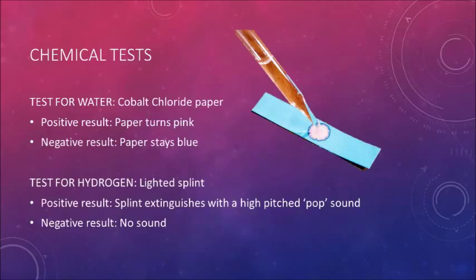The test for hydrogen that we used was to insert a lighted splint into the mouth of the test tube. It showed a positive result - the splint extinguishes with a high-pitched pop sound. However, if there was no sound, then that would show that there was a negative result and that no hydrogen was present.